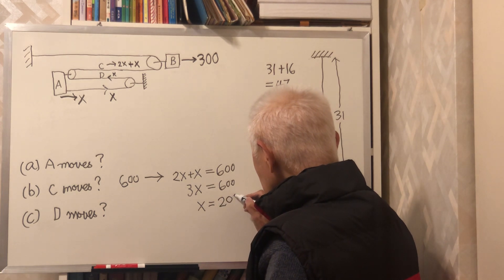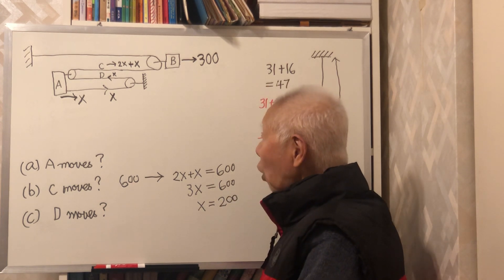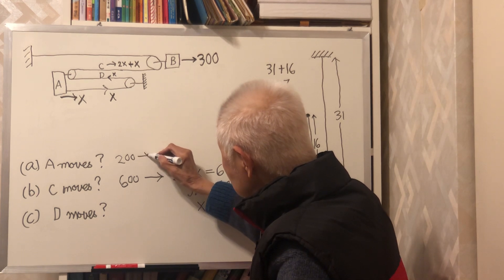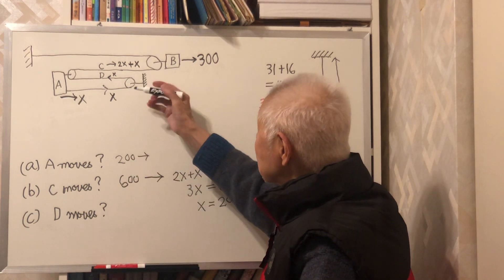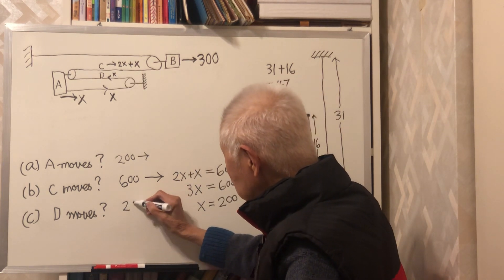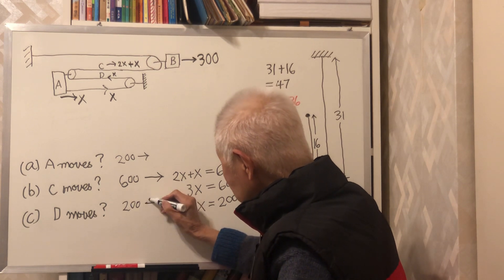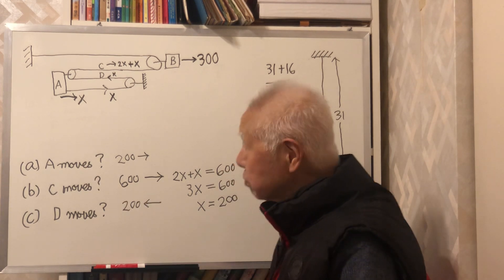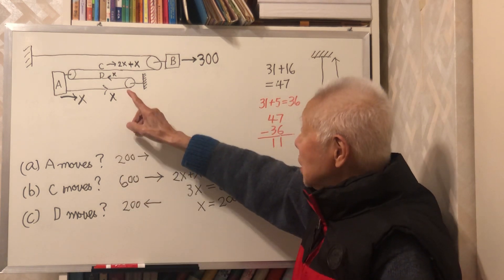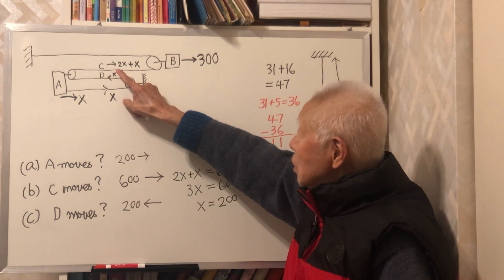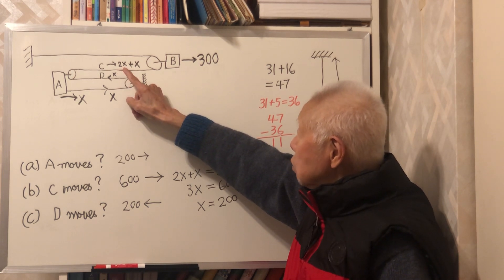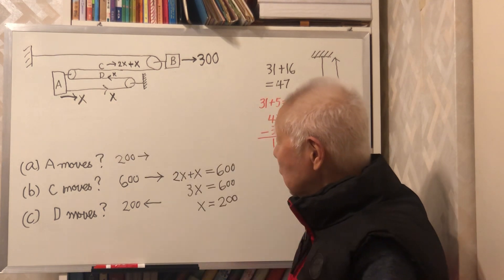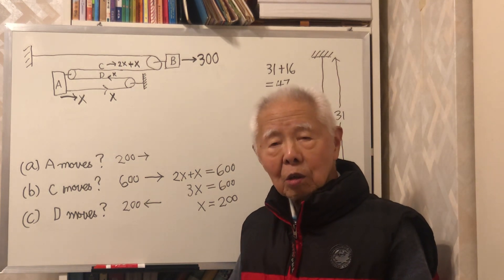Therefore, A moves 200 units this way, and D moves 200 units as well — it's x. So we've answered the problem for A, B, and C. The tricky part is the C section of the cable, which moves 2x plus x, where x is the motion of A.